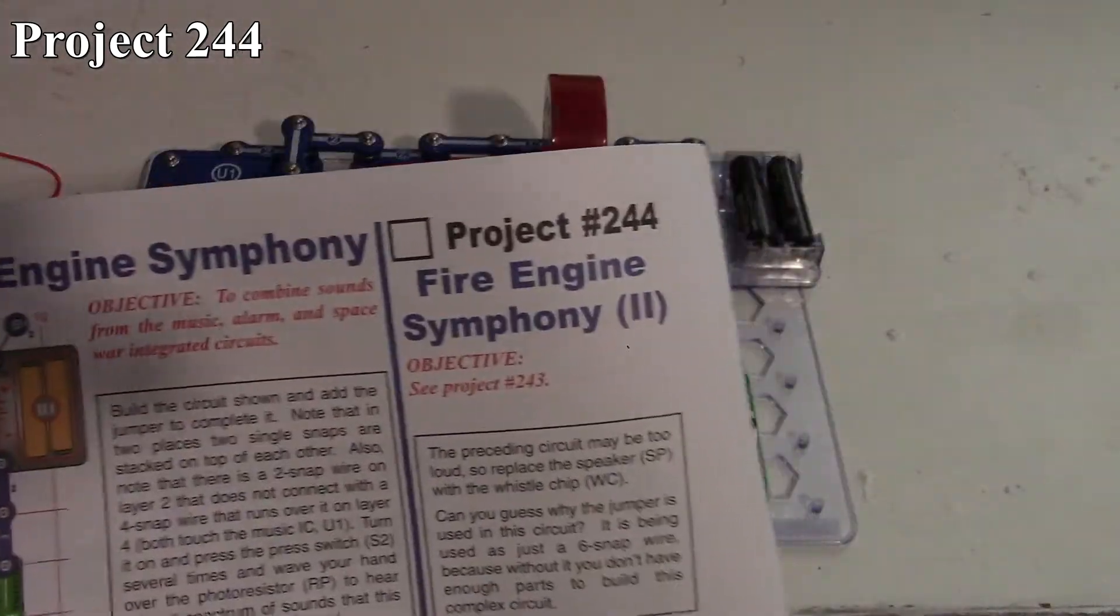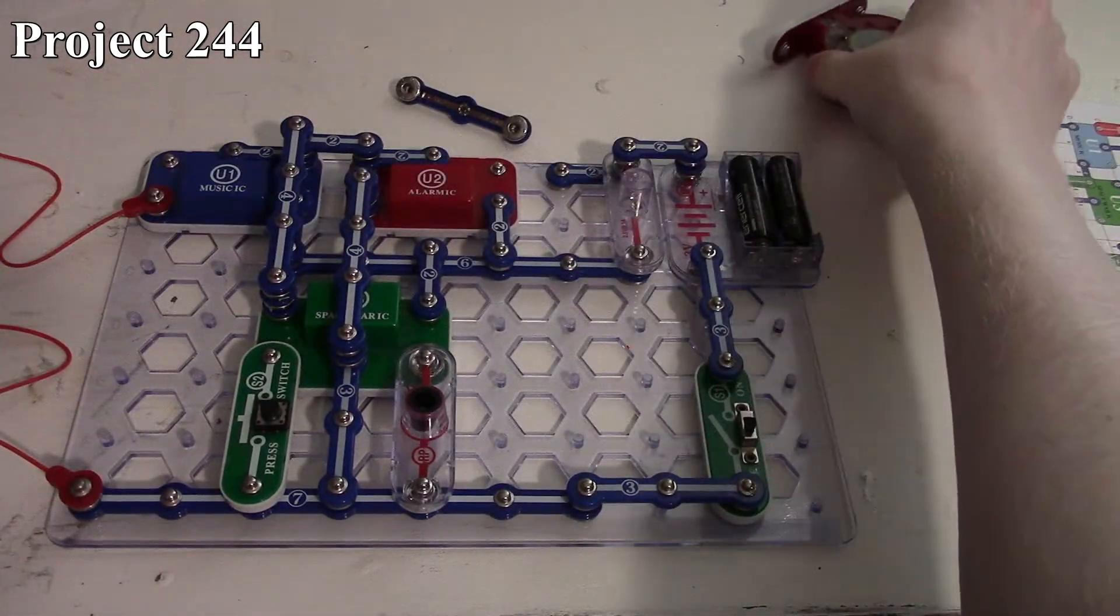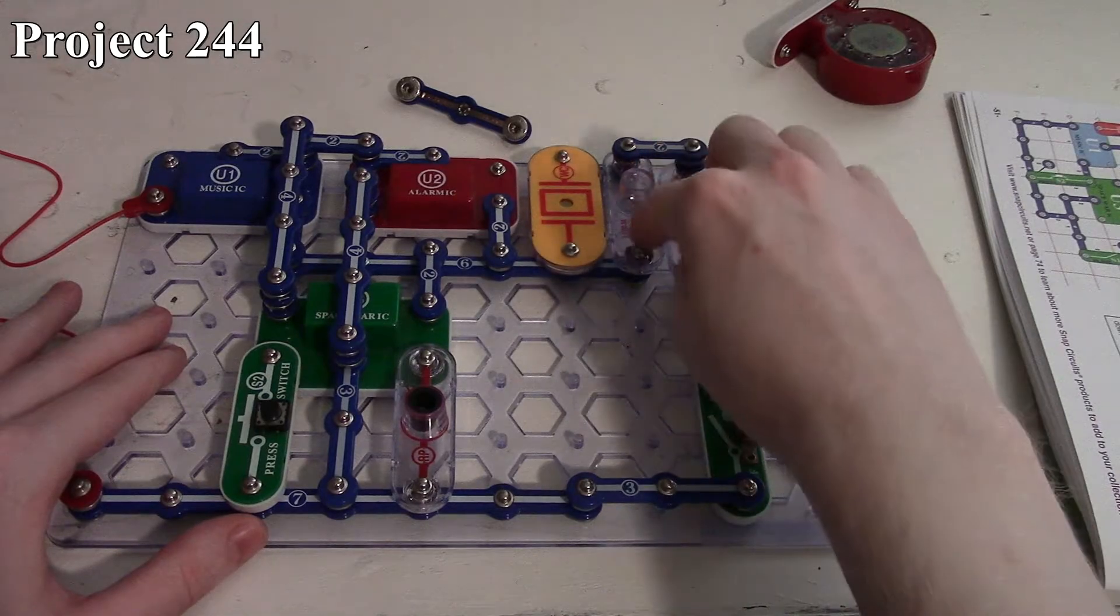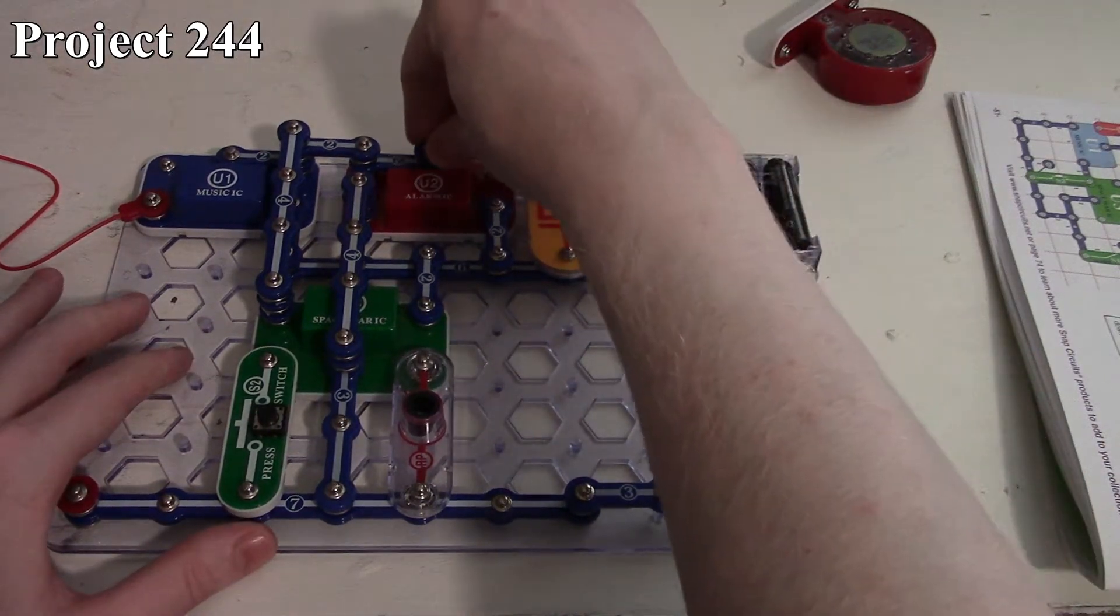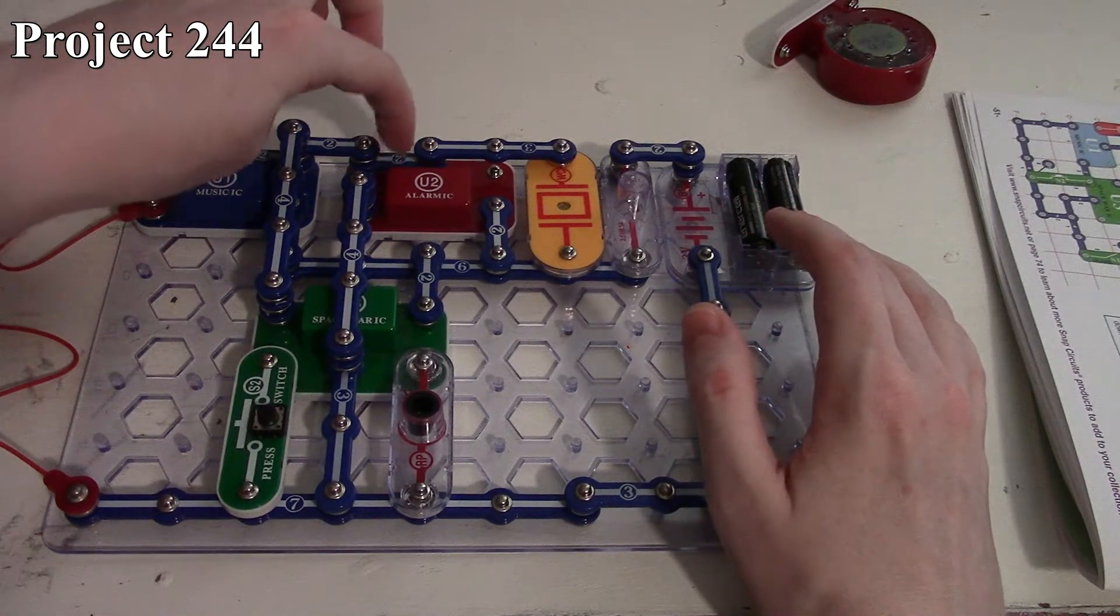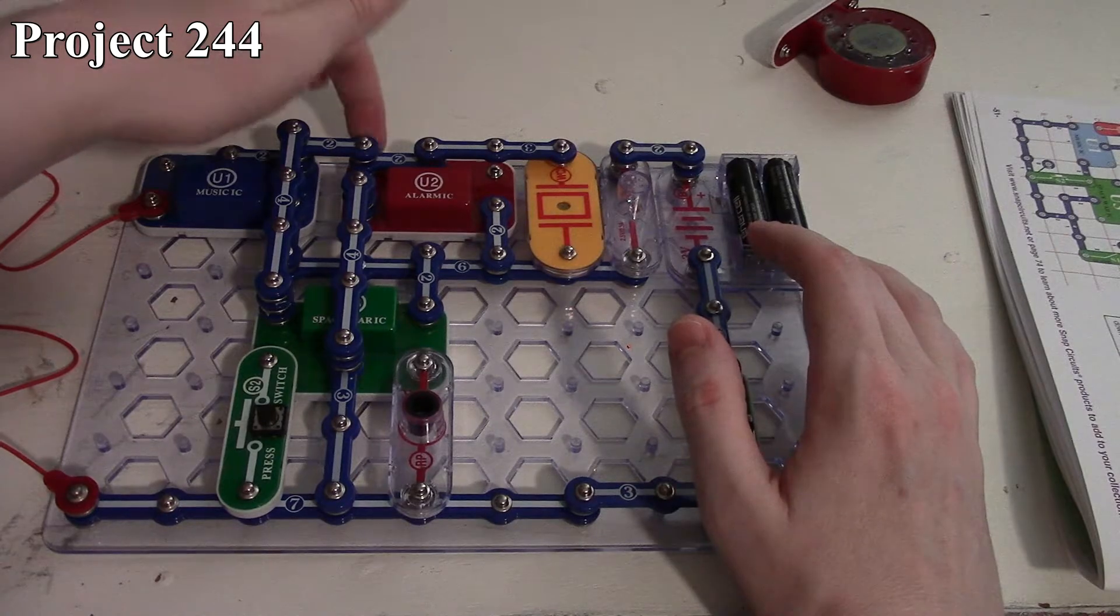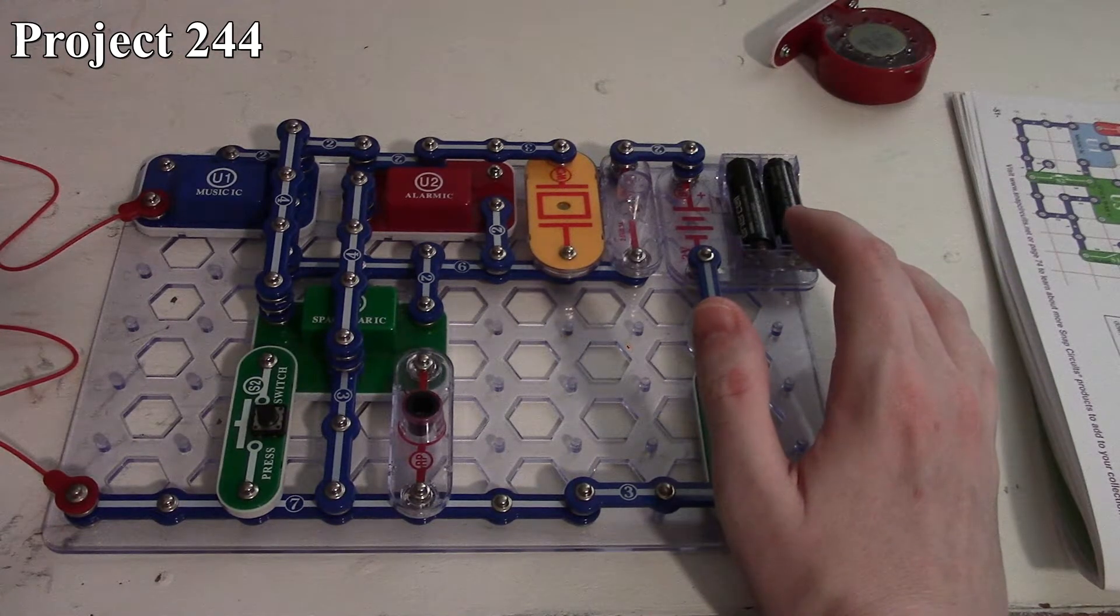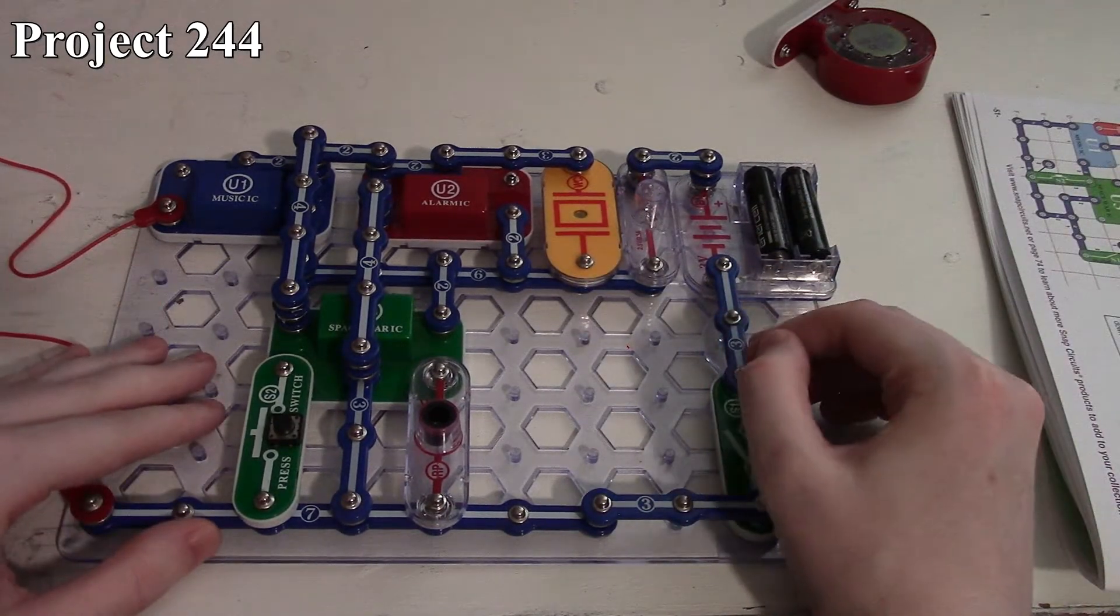That's essentially how project 243 works. Now project 244 is Fire Engine Symphony 2. What they have us do with that is we change out our speaker, so we unplug the speaker and replace it with our whistle chip. Because our lamp is here, our whistle chip will work just fine in its current configuration. Now, the one interesting thing about project 243 and 244 is they use this 2-snap here on the Alarm IC.